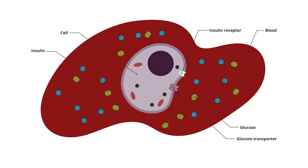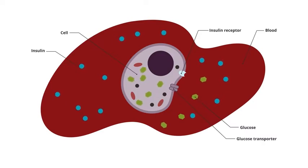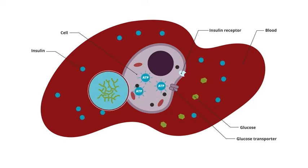For most cells in the body, insulin is like a key that is needed to open a door in the cell that allows glucose to be taken up into the cell and removed from the blood. At that point, the glucose might be used by the cell for immediate energy needs or stored as glycogen for later energy needs.